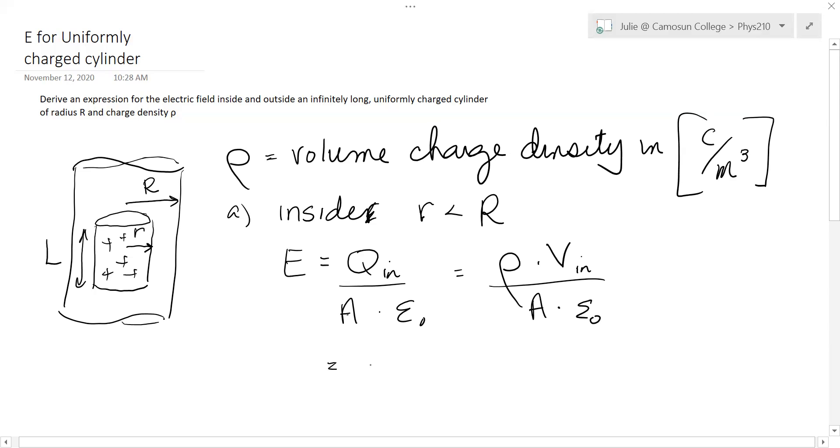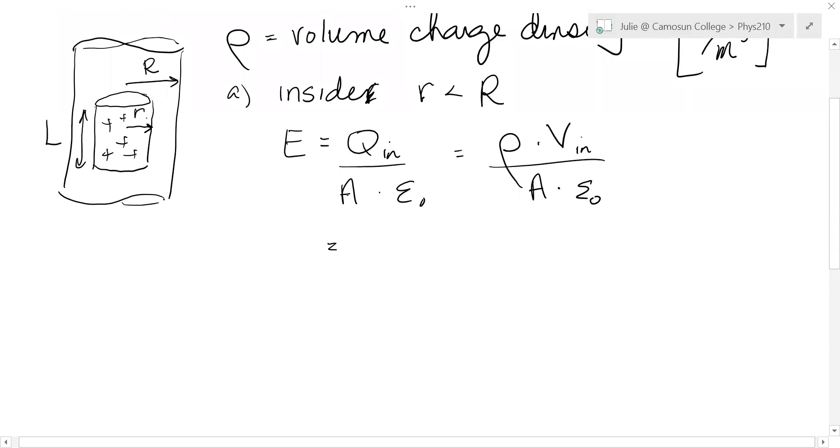Now the surface area that we use here for A is the surface area of the Gaussian surface through which the electric field pierces perpendicular. So it's only the curvy sides. It's not the top and bottom because the electric field skims across there and doesn't pierce through. So we have rho, volume of that Gaussian cylinder is pi little r squared L.